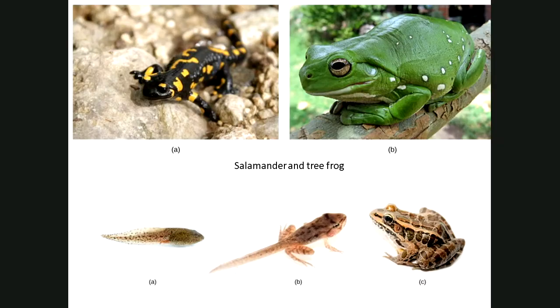At the top left you see a salamander, on the right a tree frog, and down below you see the double life I talked about — from tadpole to adult frog.